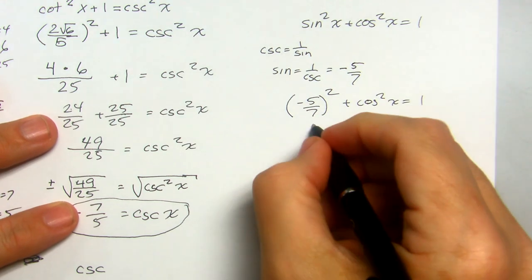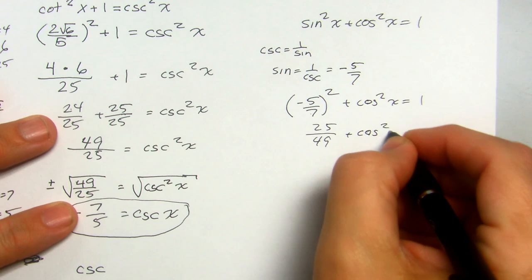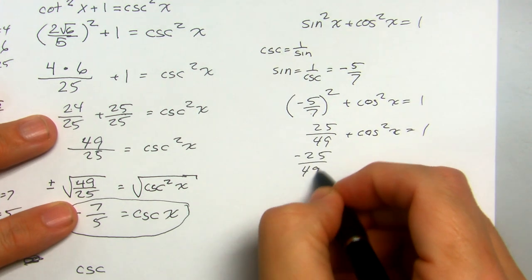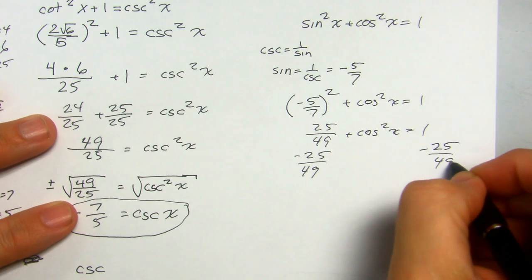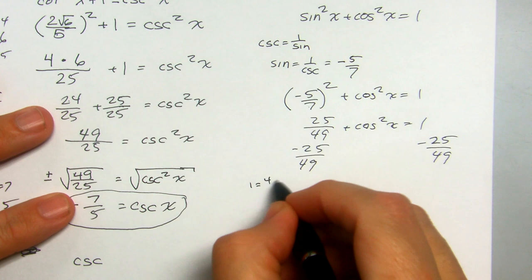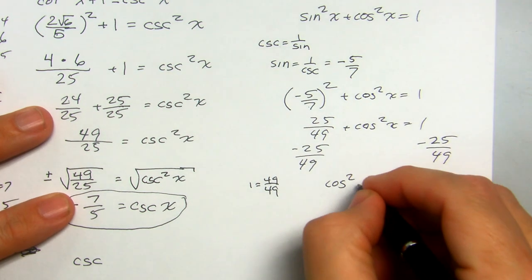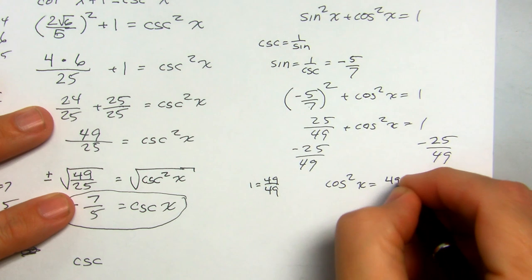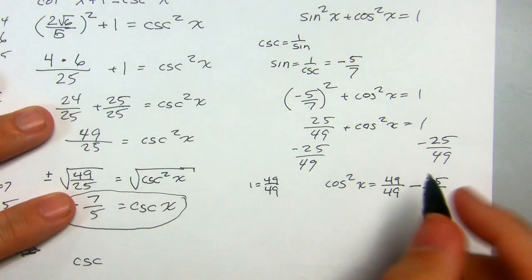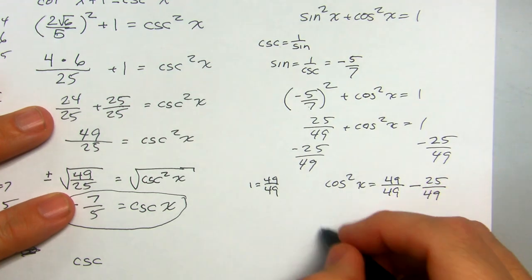5 squared is 25, 7 squared is 49. So 25 over 49 plus cosine squared of x equals 1. Let's subtract 25 over 49 from both sides. I know 1 equals 49 over 49, just using those denominators. So cosine squared x equals 49 over 49 minus 25 over 49. Take the square root of both sides.